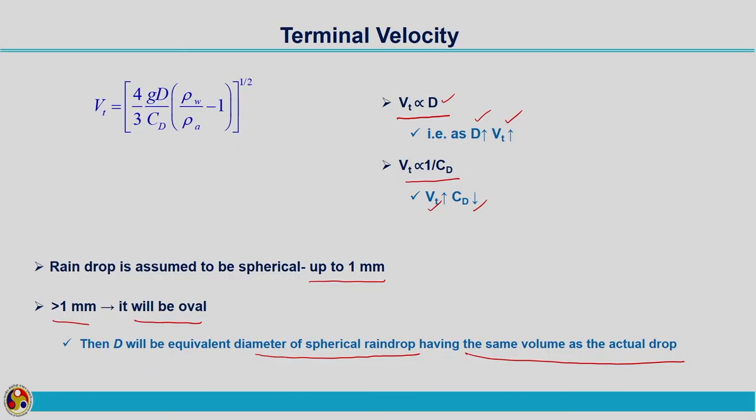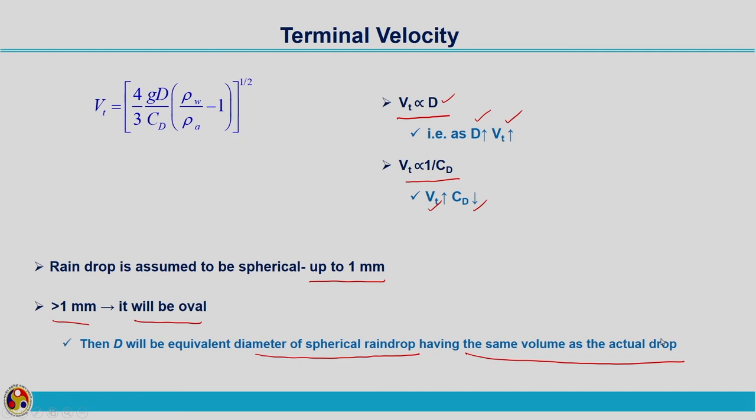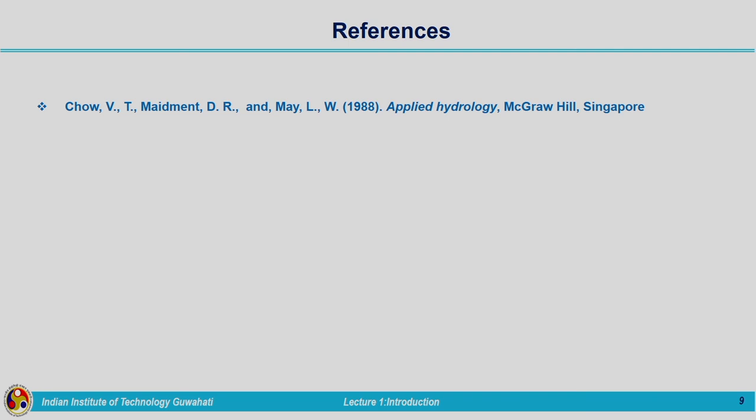That is all about terminal velocity. We now know the velocity with which the raindrop is falling down, calculated from the balance of gravity force, buoyant force, and drag force. In the next lecture, we will see the intensity of rainfall — what will be the intensity of rainfall experienced on the ground — explained by means of a thunderstorm cell model. The reference for this terminal velocity section is from Ven Te Chow and others, Applied Hydrology textbook. Thank you.